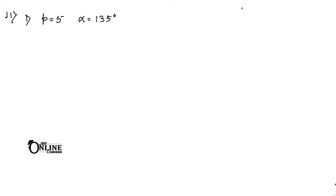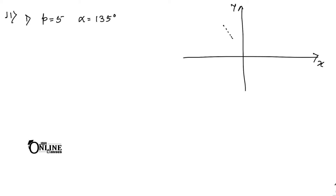So suppose this is your y-axis and this is your x-axis. Since alpha = 135 degrees, first draw a rough sketch showing 135 degrees. Draw a straight line accordingly. Here the perpendicular length equals p, that is 5. So p = 5 and alpha = 135 degrees.